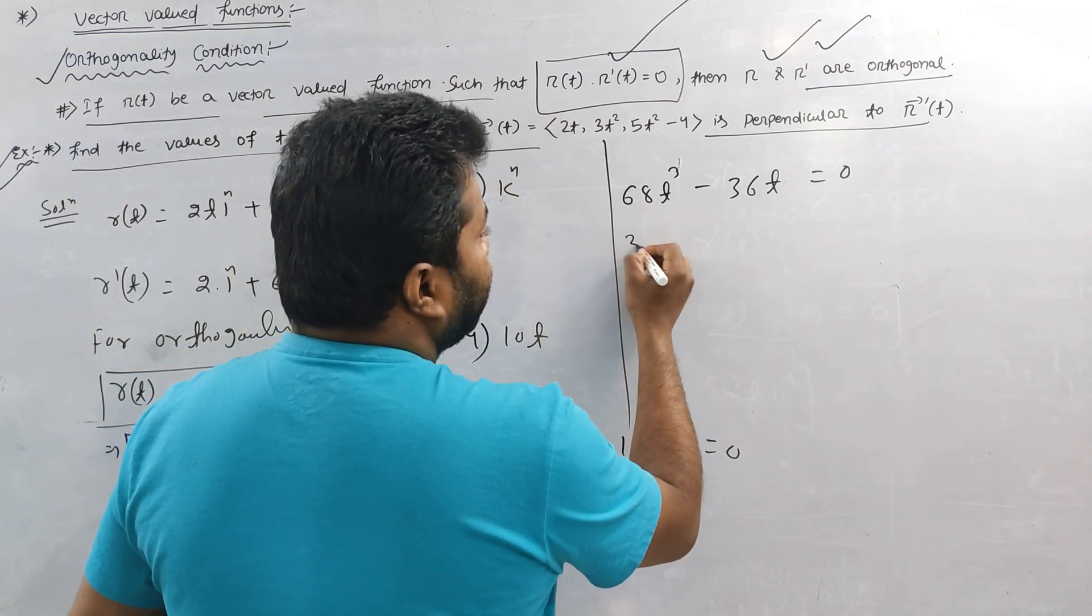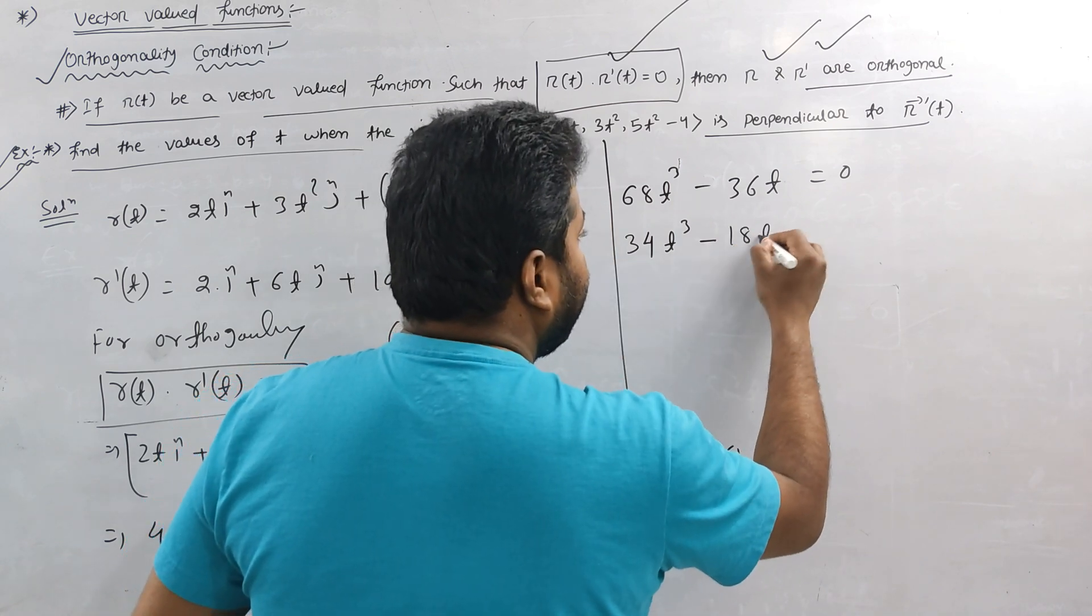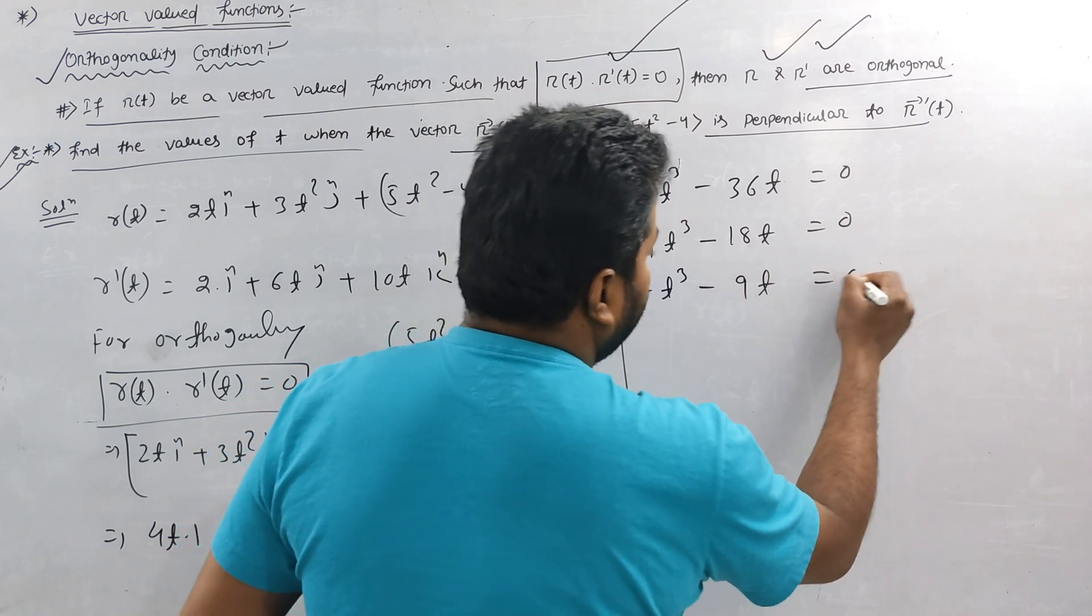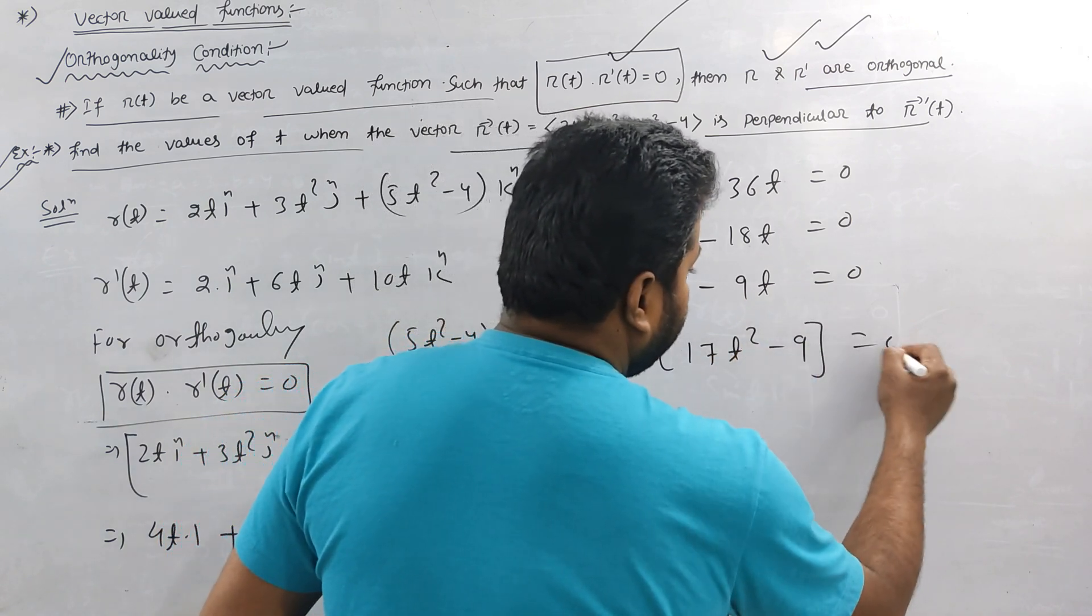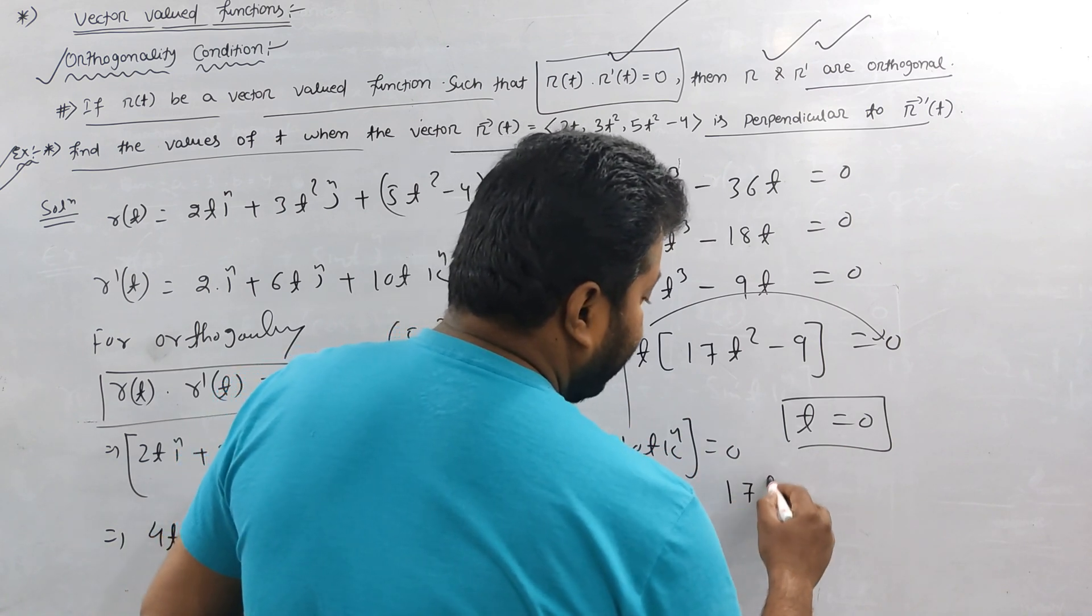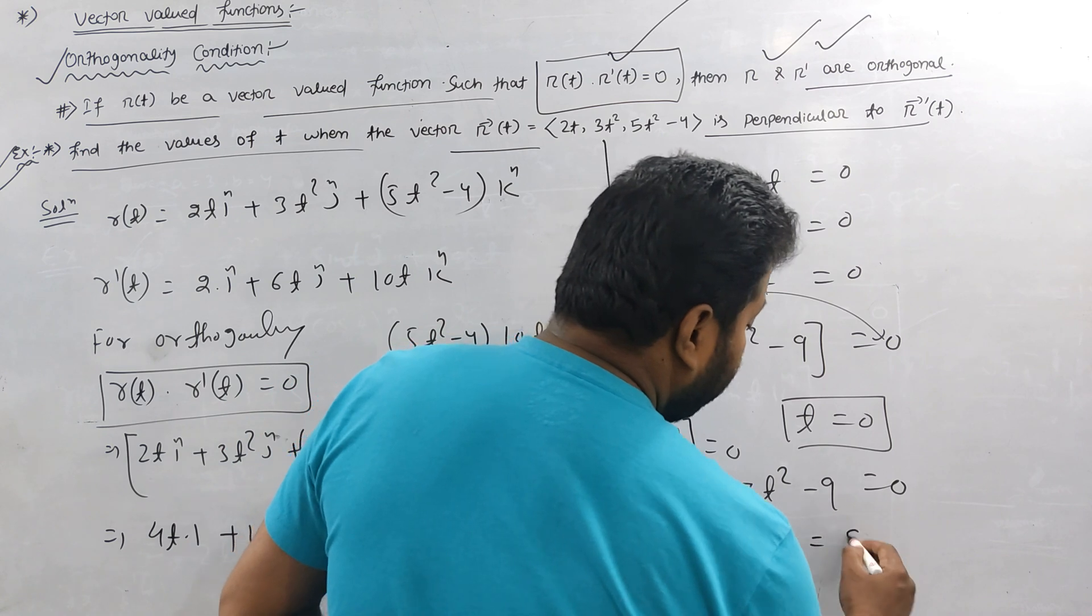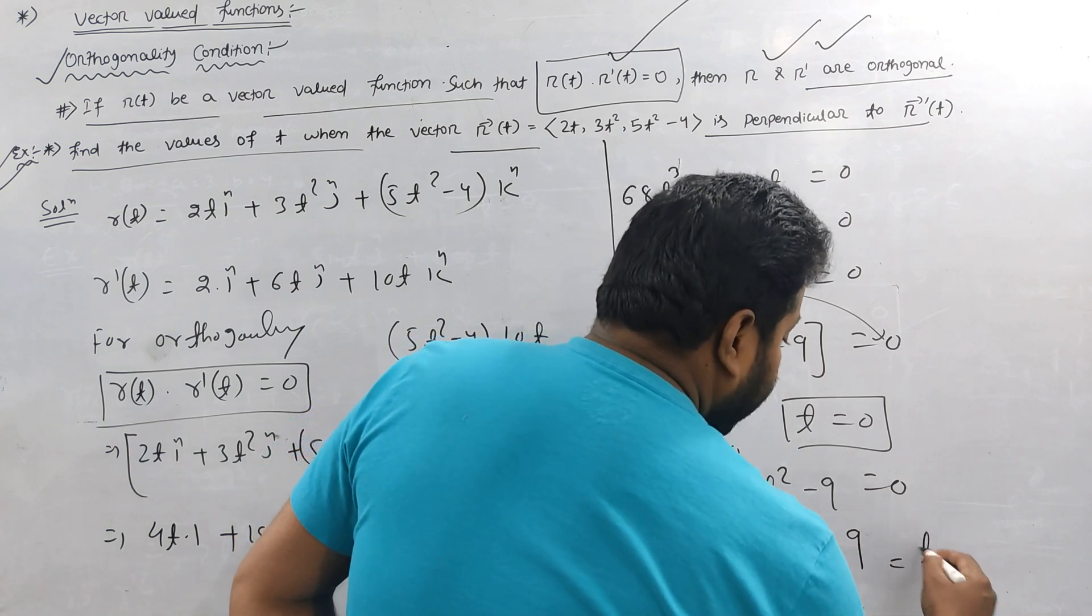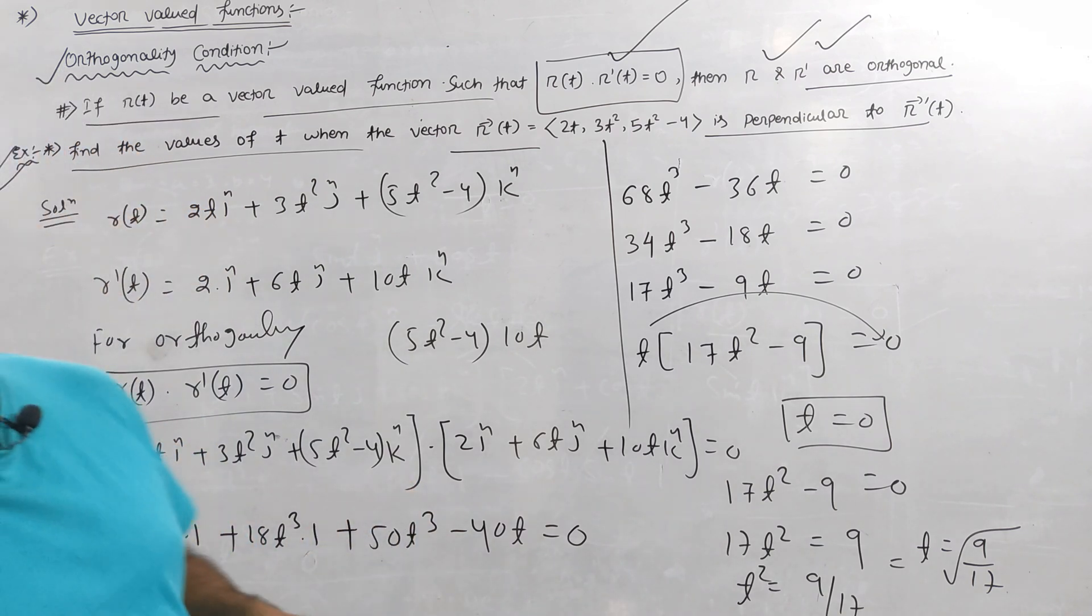Taking common, 17t square minus 9 is equal to zero. 17t square is equal to 9. T square is 9 by 17. T is equal to plus or minus root of 9 by 17. This t value is where the vectors are orthogonal.